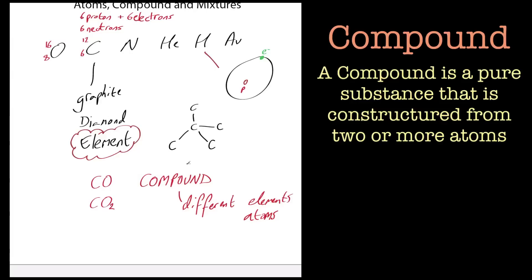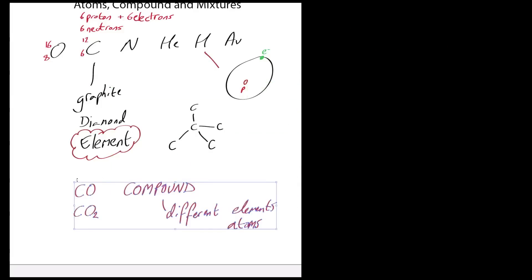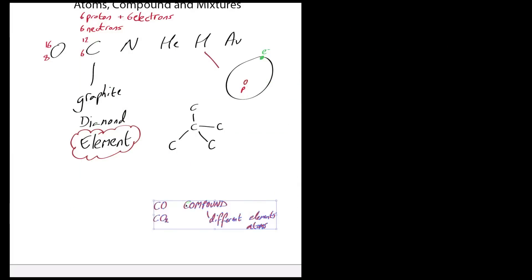Compounds have bonds, whether they're ionic or covalent. One thing I've missed out in this tutorial is mixtures, so I'm just going to briefly explain mixtures now.